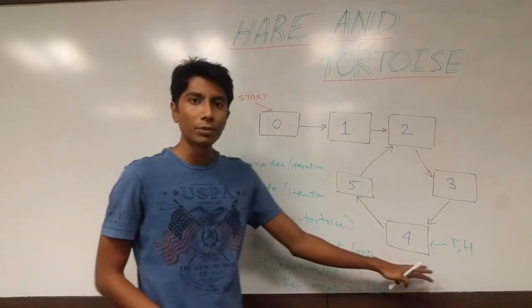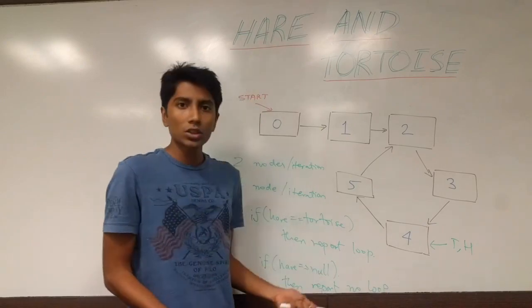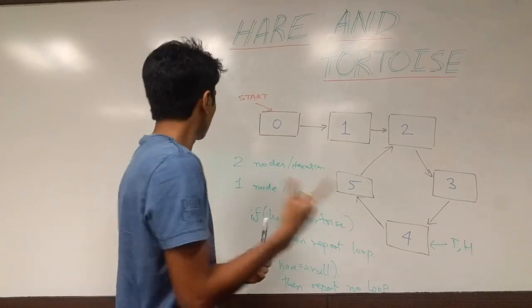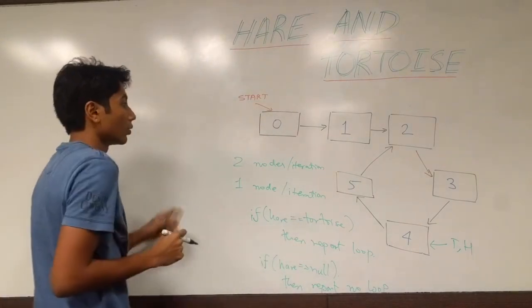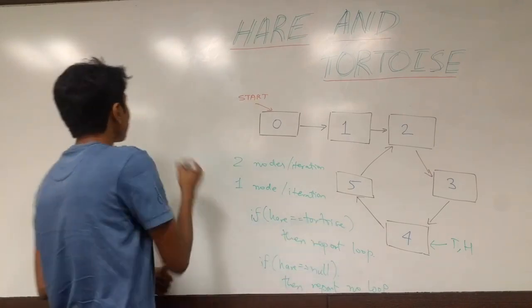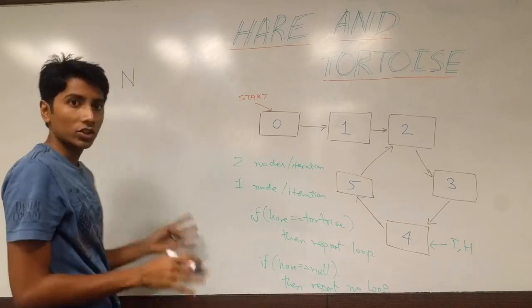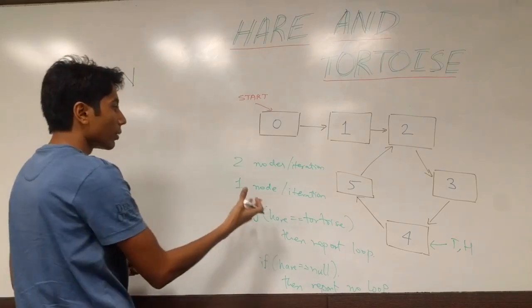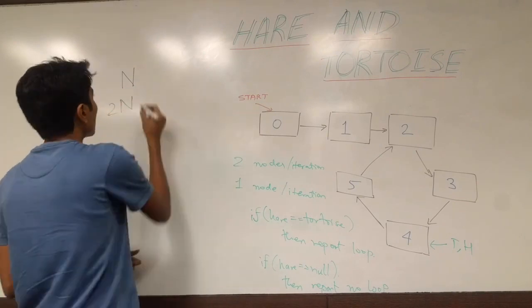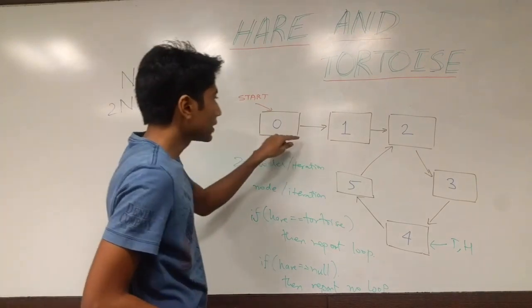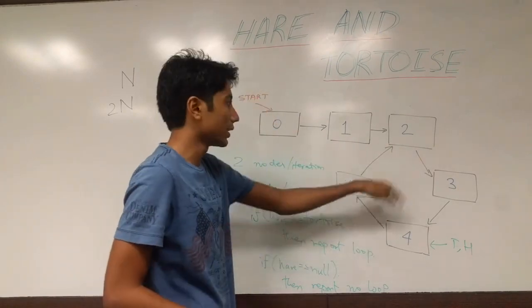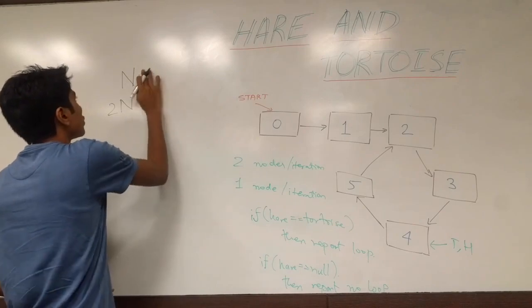This algorithm is pretty simple and it works for a reason. The tortoise moves at just one node per iteration, so the total number of nodes the tortoise has moved is n after n iterations. The total number of nodes the hare has moved is 2n after n iterations. Now the tortoise could have been going around in circles in this loop.